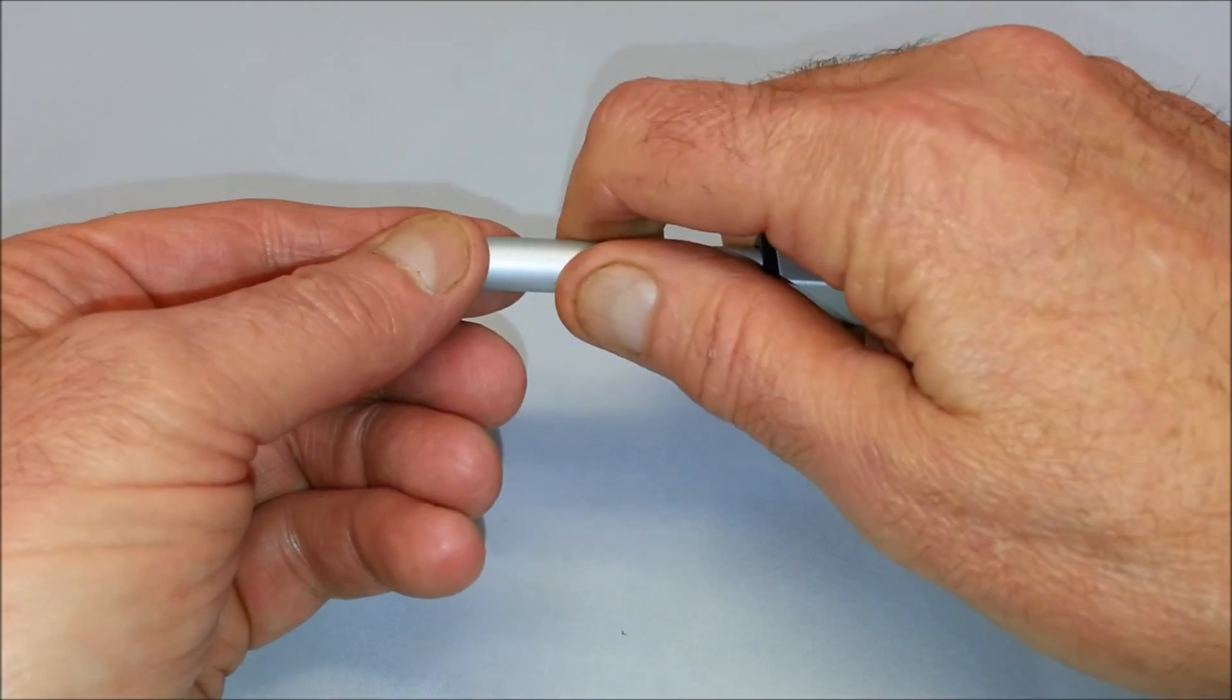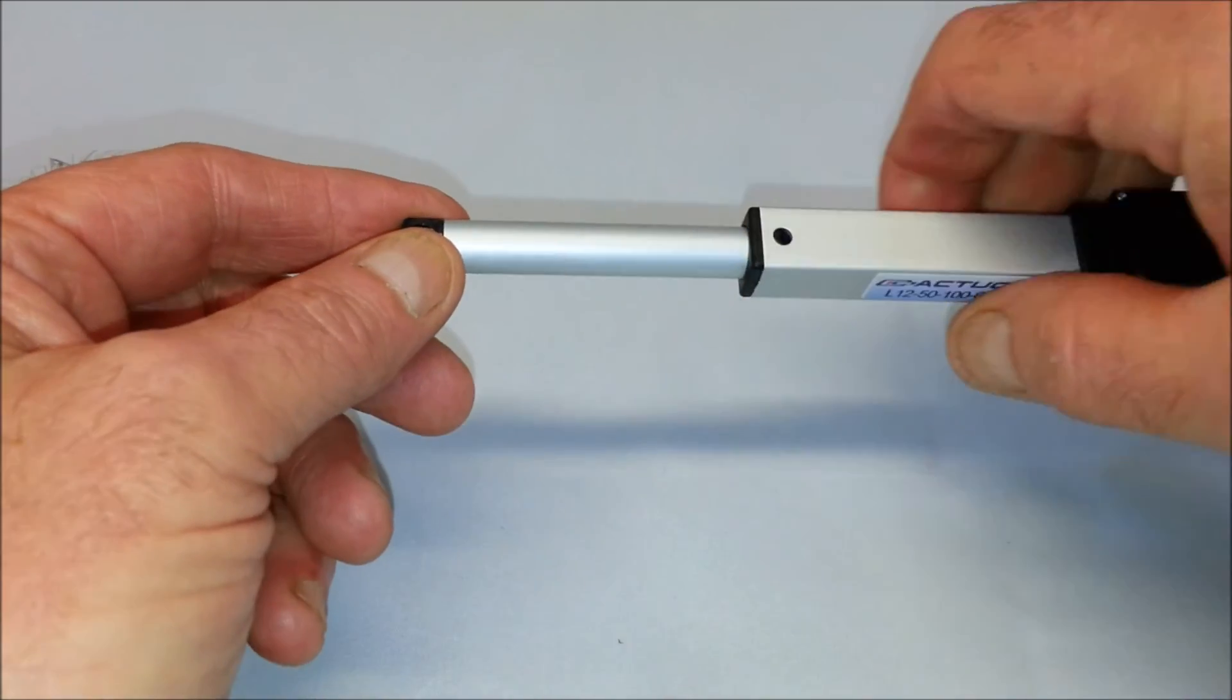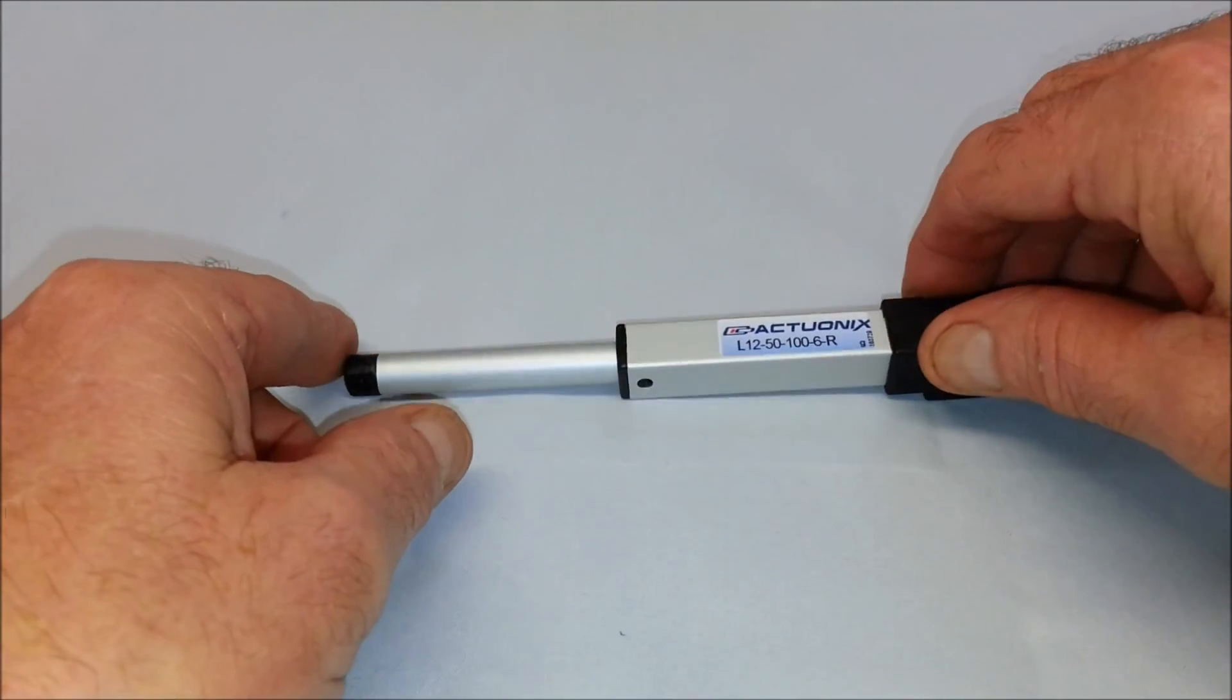Tightening the rod end without firmly holding the actuator shaft is not recommended and is the easiest way to bust your nut.